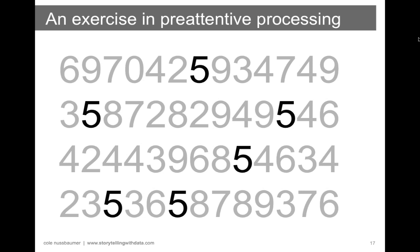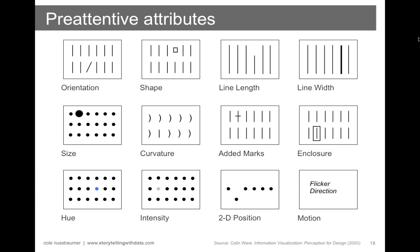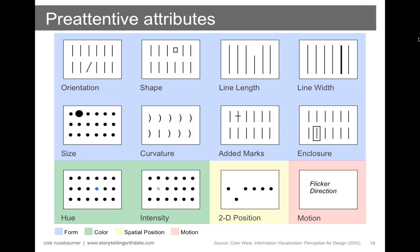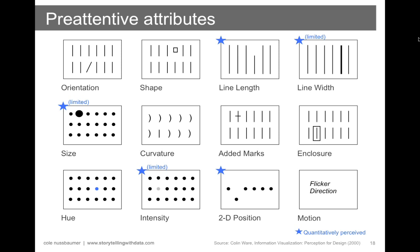The fives just jump off the page at you — you almost don't even need to think about it. They were hard to pick out before, and suddenly they're so easy to see. What we're doing is setting the fives apart from everything else simply with a pre-attentive attribute — here we're varying the hue or color of the fives to make them the one thing that's different from everything else. Pre-attentive attributes, if used strategically, can help us get our audience to see what we want them to see before they even know they're seeing it.